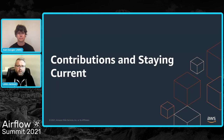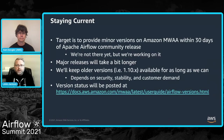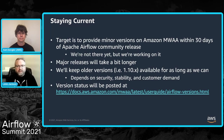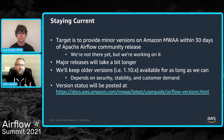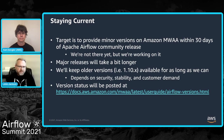Now let's talk about open source contributions and how we're planning to stay current with Airflow community versions. Our target is to provide minor versions within about 30 days of release — we're not there yet, but that's the goal. For example, 2.1.2 was just released, and ultimately our goal would be to have it available within 30 days. A major release will take longer, though how much longer depends on what the next major release looks like.